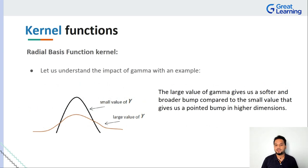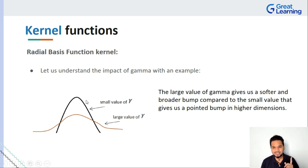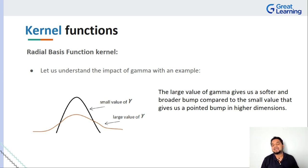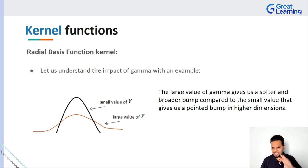It's a simple yet foundational concept for getting RBF kernels to work. When you start adjusting gamma, it gives you a softer or broader bump in the higher dimensions, helping you work with your data in a fantastic way. Now that we've understood machine learning, supervised learning, unsupervised learning, support vector machines, and kernel functions, it's time to dive into the advantages and disadvantages of SVMs.